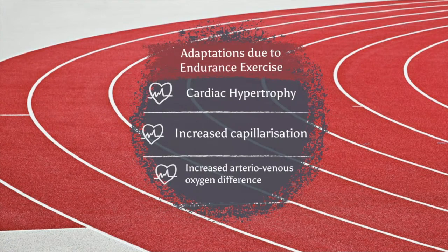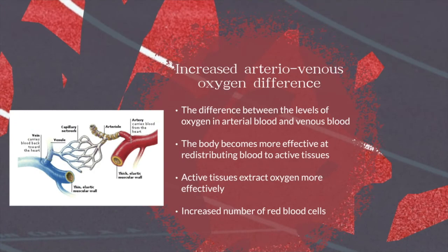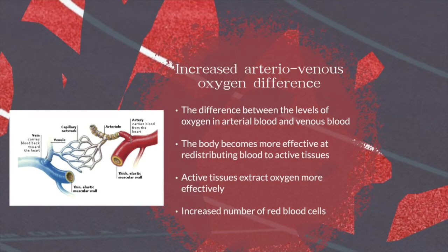Finally, increased arteriovenous oxygen difference. This refers to the level of oxygen in arterial blood and the difference between that and the level of oxygen in venous blood. This occurs because the body becomes more effective at redistributing blood to the active tissues — so when exercising, it becomes more efficient at directing blood to the working muscles and away from vital organs that don't need it as much. The active tissues also become more efficient at extracting oxygen, due to an increased number of capillaries.